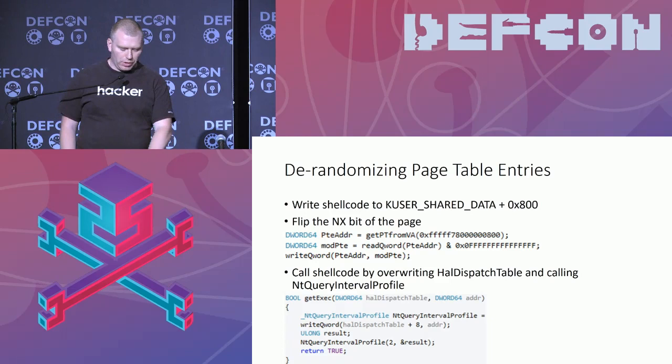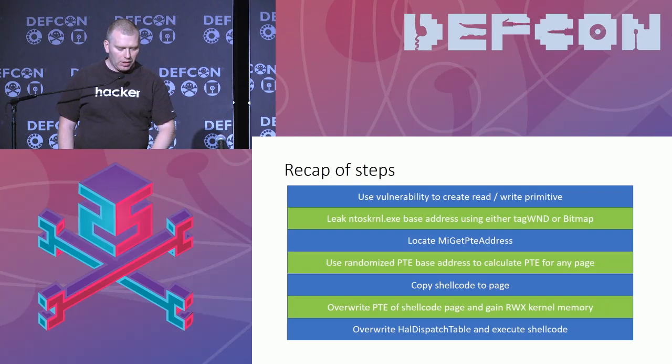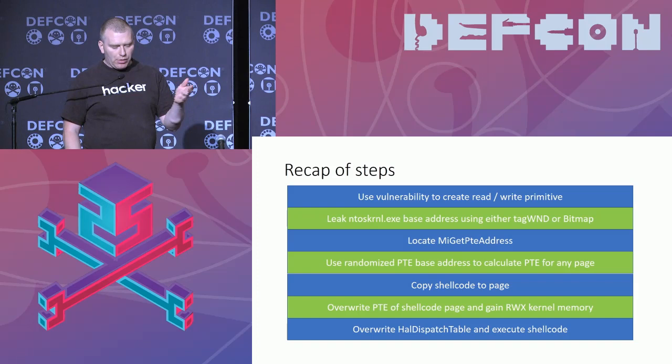Just to recap the steps: we use the vulnerability to create a read-write primitive. From that, we leak the base address of the NT kernel using either of the primitives. We locate the address of MiGetPteAddress. From that, we get the randomized base address of the PTE tables. We can then calculate the PTE of our shellcode address, copy our shellcode to that page, then overwrite the PTE of the shellcode, and run it.